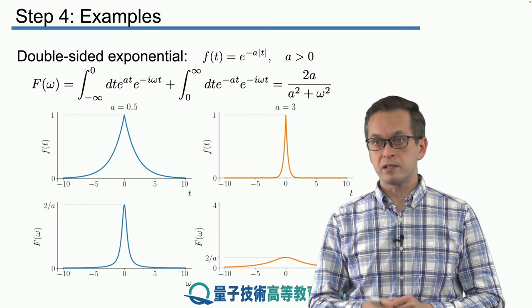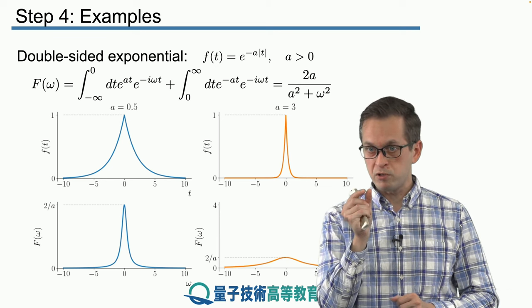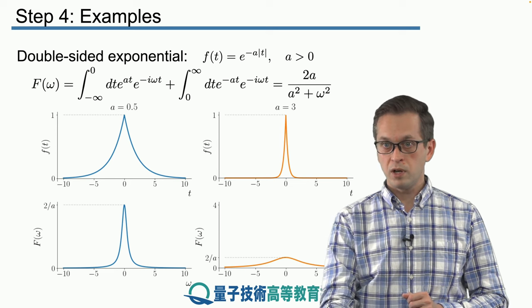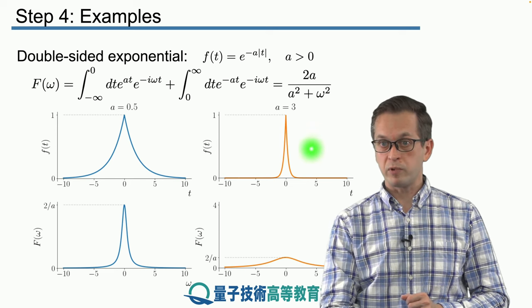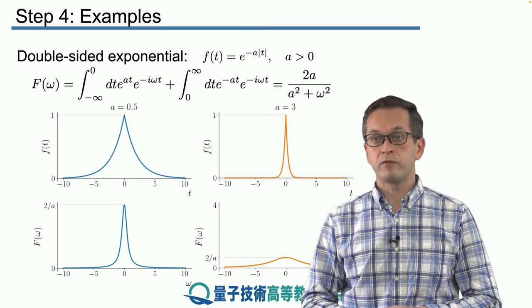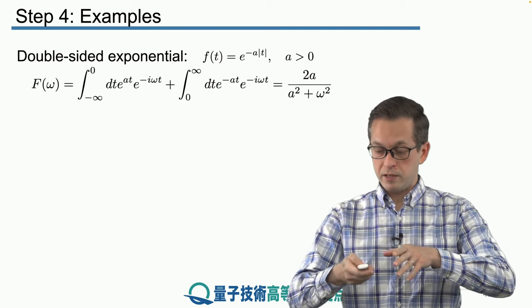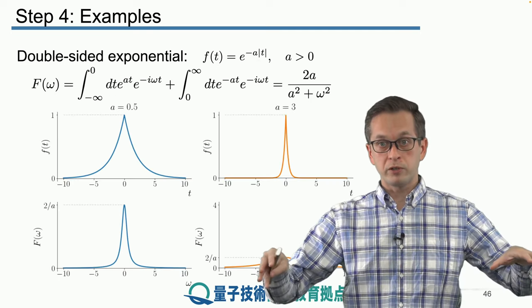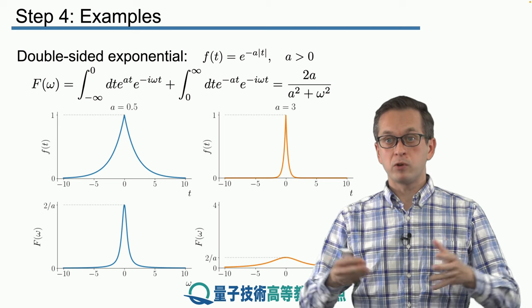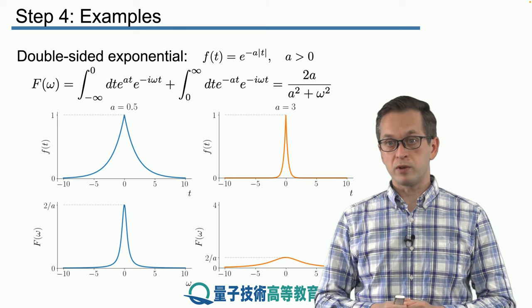However, if your signal is very bursty, it's concentrated only in a very small time window, like this orange example over here, then its Fourier transform is a lot more broader, meaning that in order to reconstruct it, you have to consider a lot more frequencies,